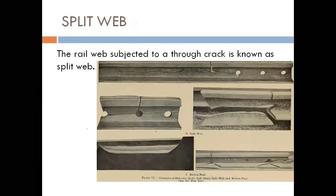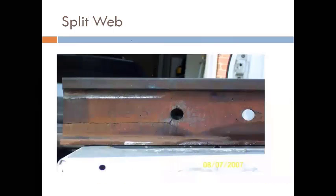Next is split web. Similarly, when the rail web is cracked in the longitudinal direction, it is called split web. Split webs mostly occur where holes are provided in the railway tracks. Therefore, we must ensure that the distance between two holes is a sufficient, particular distance so that the crack does not propagate and cause split web in that section.